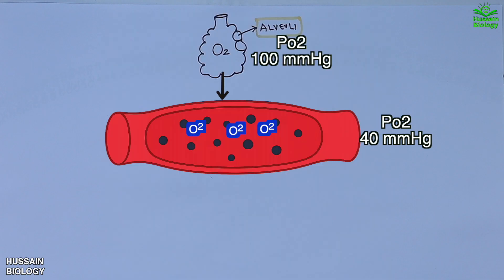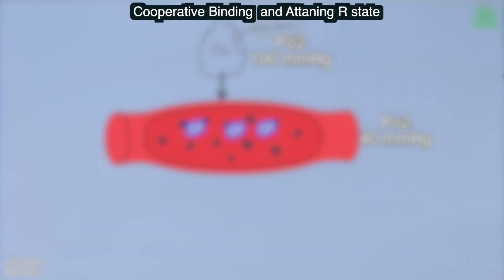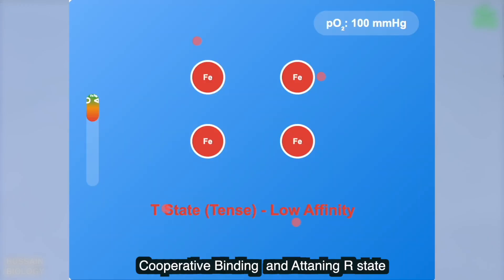The second point is cooperative binding and attaining the R state (relaxed state). To understand this, we have to see what happens inside the red blood cells. Hemoglobin arrives mostly in the T state, which means it has low affinity for oxygen but not zero affinity. The high PO2 in the alveolus (100 mmHg) allows the first O2 molecule to bind even in the T state.